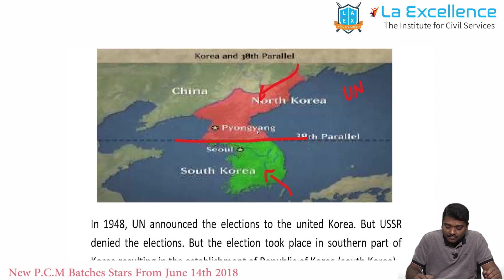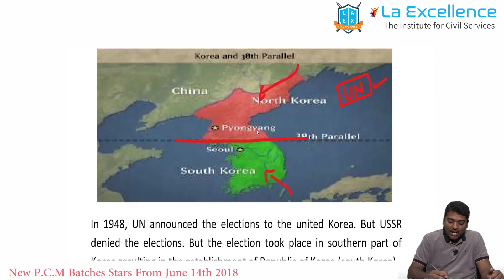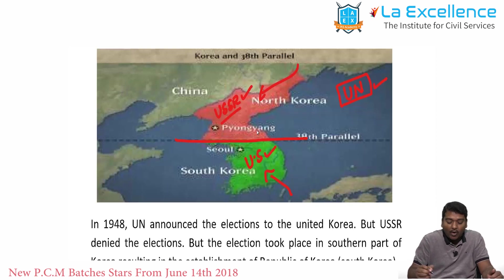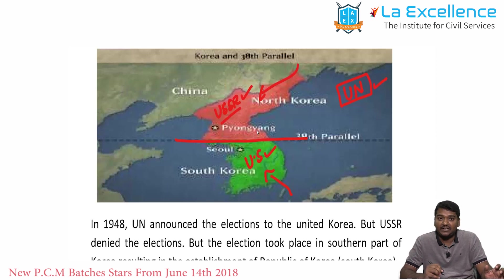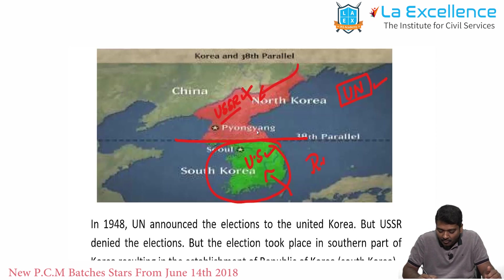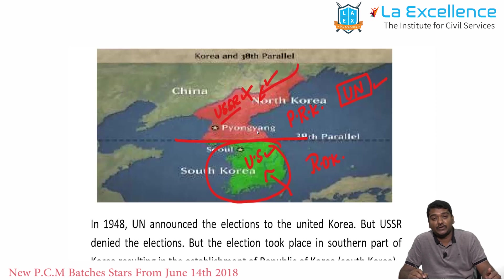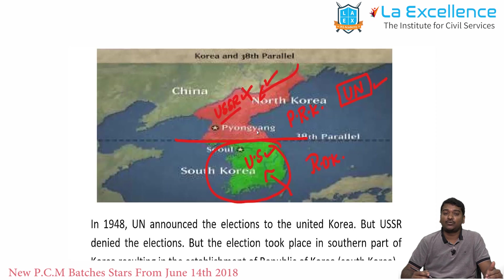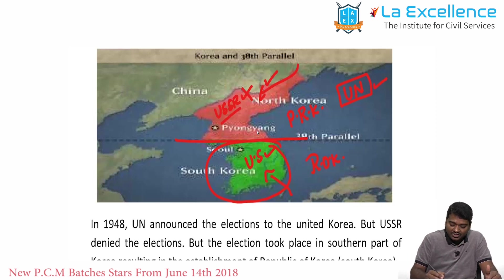They went to the United Nations, which said elections should be held and let the people of Korea decide. The northern part, under Russian control, was promoting communism, while the southern part under US control was promoting democracy. Russia boycotted the UN-mandated elections, so elections were held only in South Korea, which became the Republic of Korea. The northern part became the People's Republic of Korea with elections under one party. North Korea, with Russia's help, then started attacking South Korea.